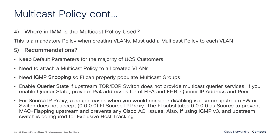As far as source IP proxy, that's enabled by default, but there are a couple of corner cases where you might disable it. To get around some issues we've had in the past with multicast, the FI substitutes all zeros in for the source IP proxy. So if you have a firewall upstream or a switch that will not accept all zeros, that's a corner case where you might turn source IP proxy off. Also, to get around some ACI issues, we've used that all-zeros source IP proxy.